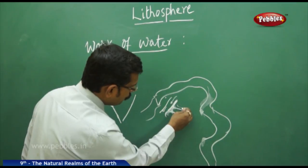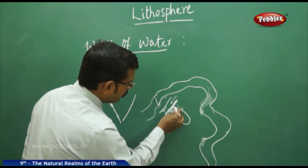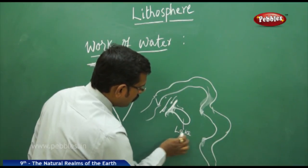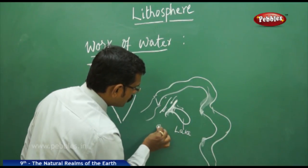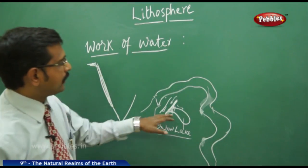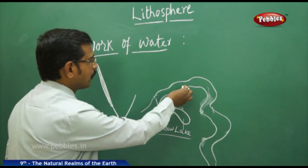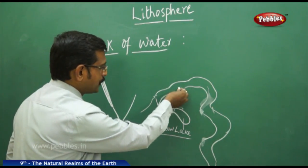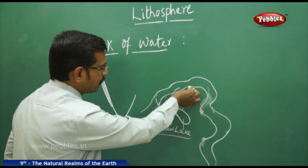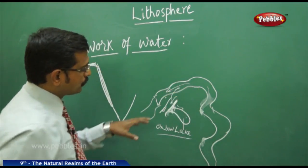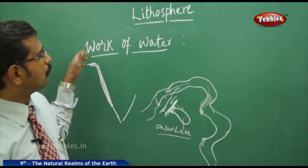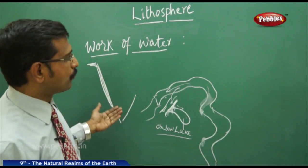The river used to flow in a winding path, but now it has stopped and flows directly. The old winding loop forms a lake called an Oxbow Lake — a lake found nearby the river where it used to flow millions of years ago. Now it is cut off, and the river flows straight.